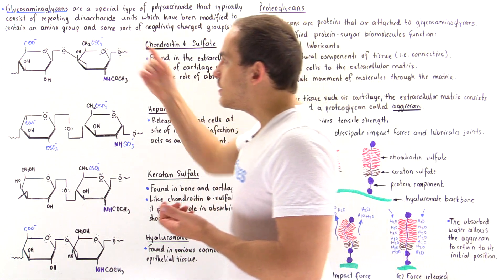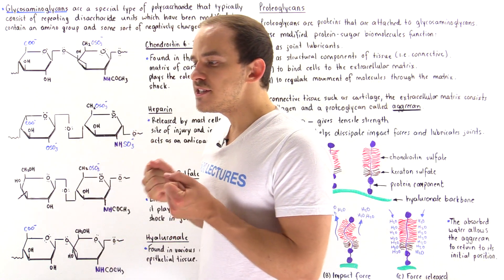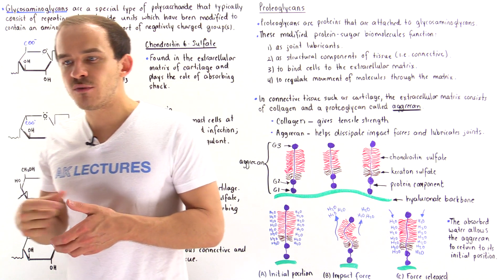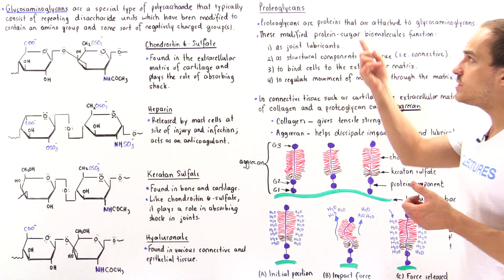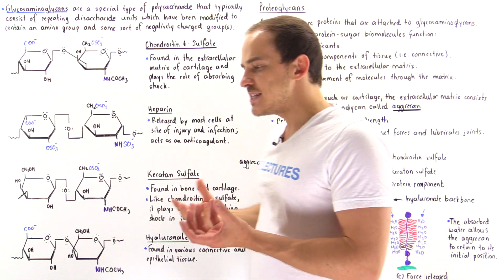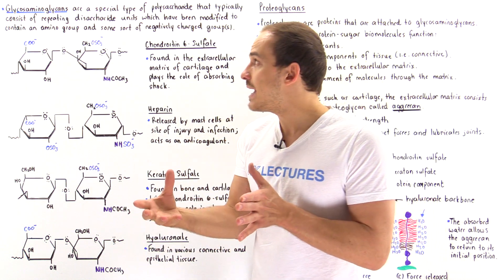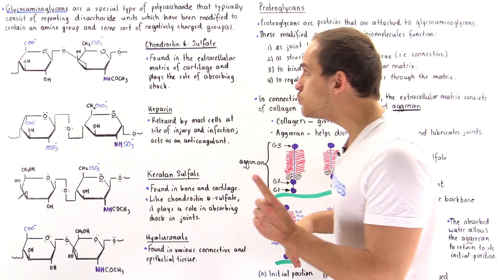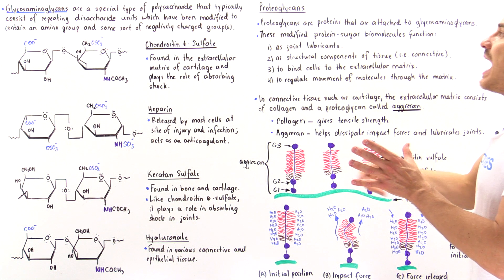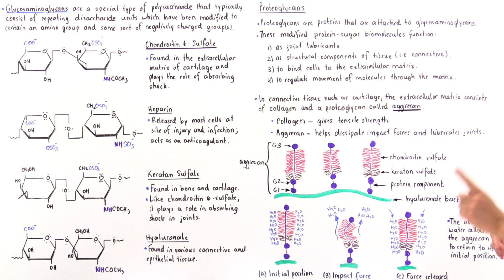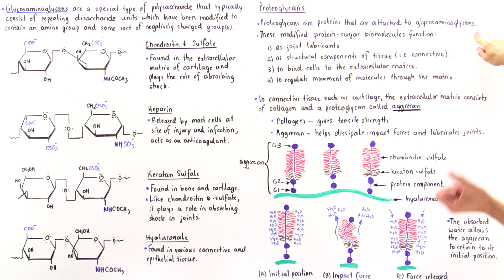Generally speaking, these glycosaminoglycans don't exist by themselves inside our body. Usually they covalently associate with proteins to form a category of modified proteins known as proteoglycans. A proteoglycan is a protein molecule that has one or many glycosaminoglycans attached to it. In fact, the glycosaminoglycan is usually the predominant component — typically 95% of the proteoglycan by mass — while only 5% consists of the protein component.